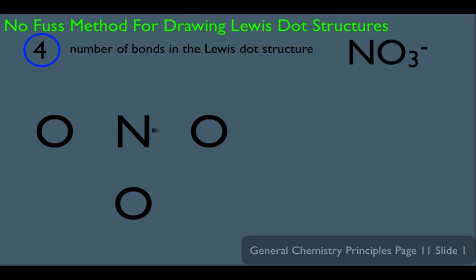Let's start making connections. We make one bond from nitrogen to each oxygen — that's three bonds, three out of four. The fourth bond is created by doubling up one of the existing bonds. It doesn't matter which one you double up — you could double the bond on the left or the bond below nitrogen. What we learn is that one oxygen is doubly bonded to nitrogen, and the other two oxygens are singly bonded.